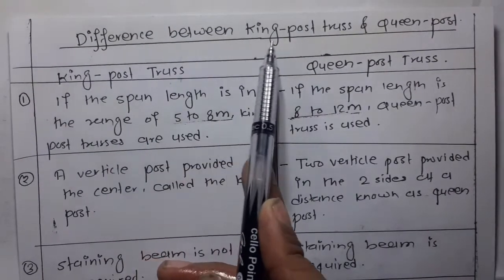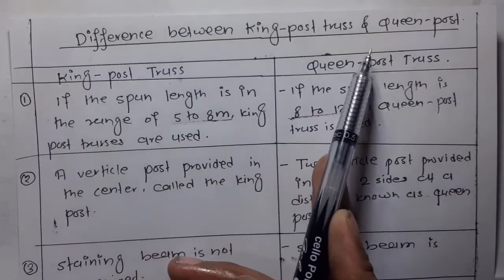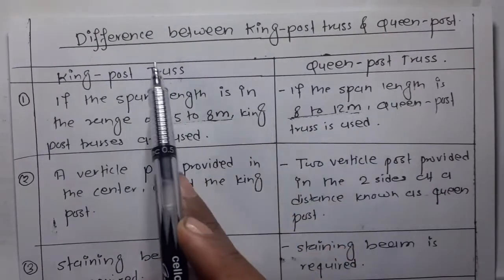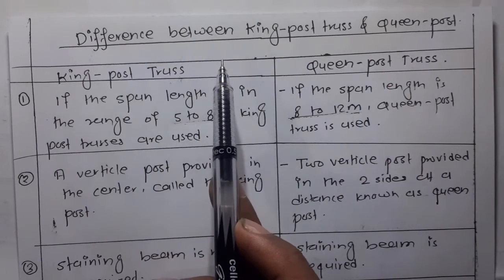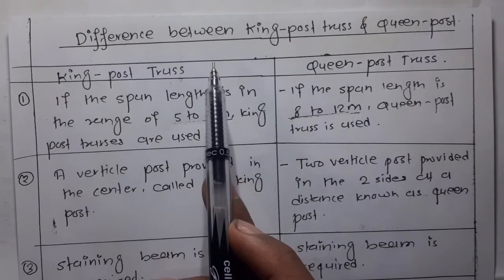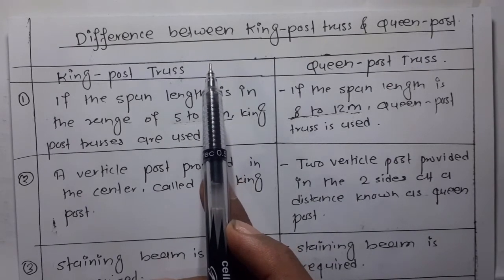The difference between king post truss and queen post truss. King post truss and queen post truss both are types of truss roof.